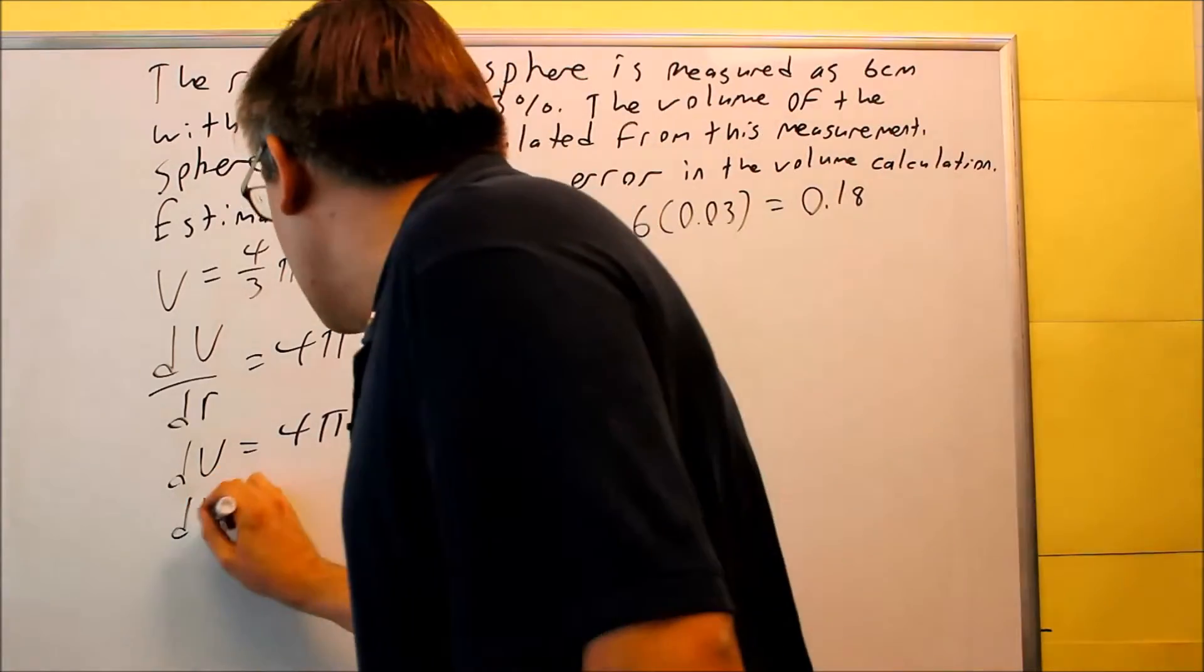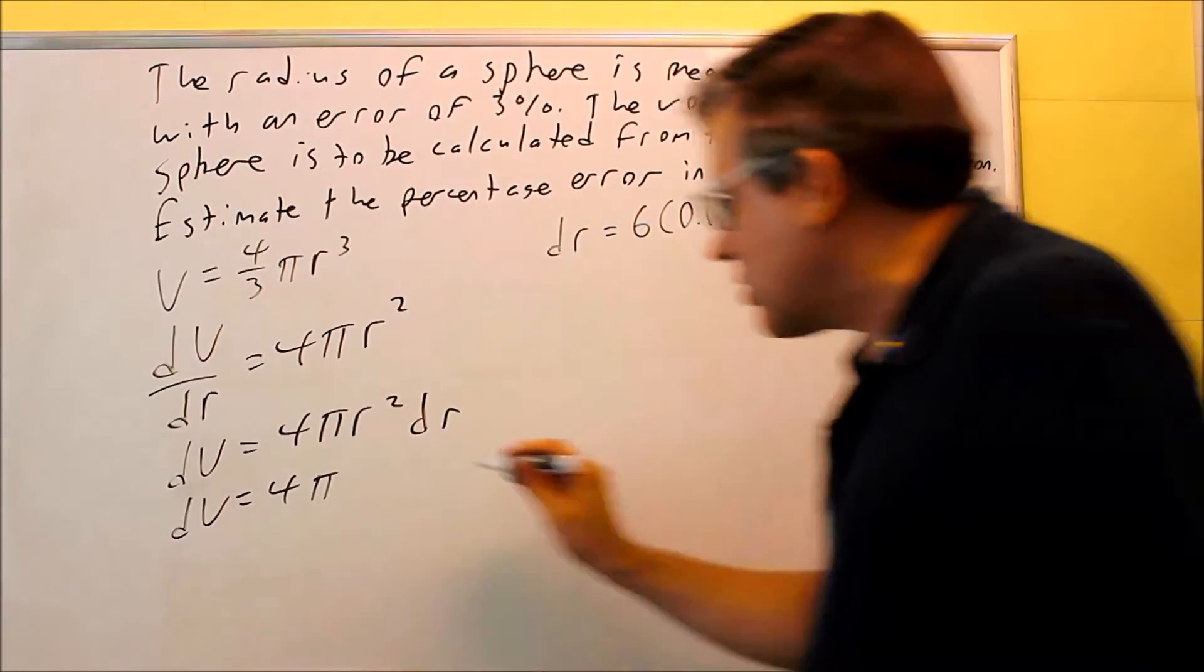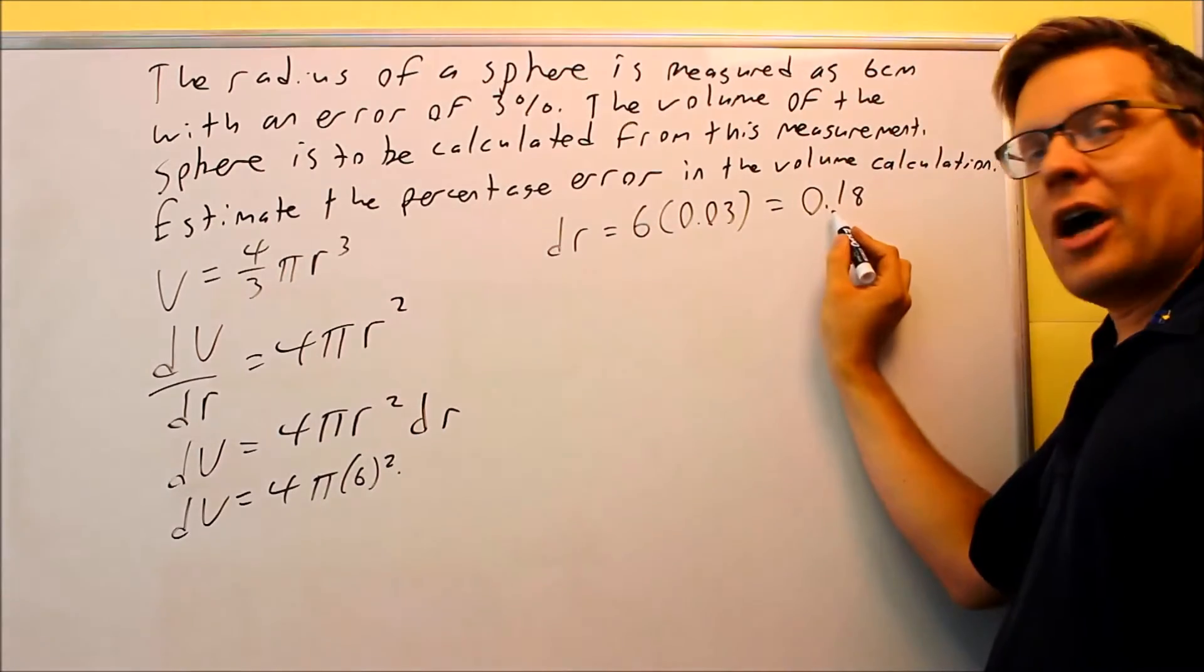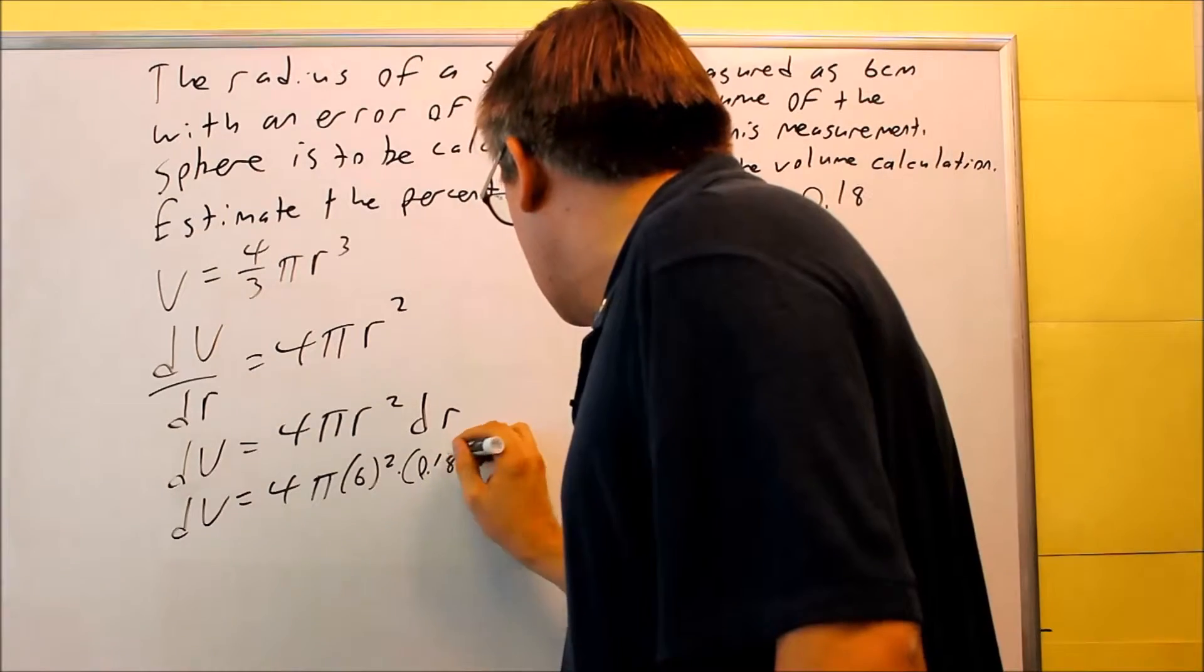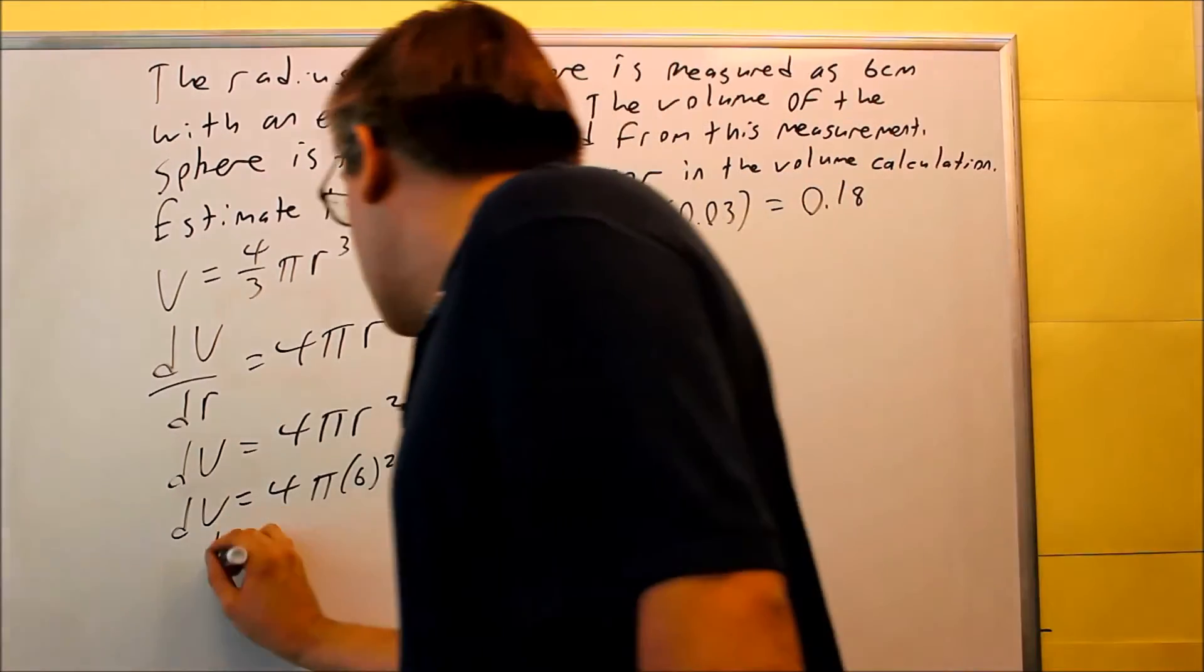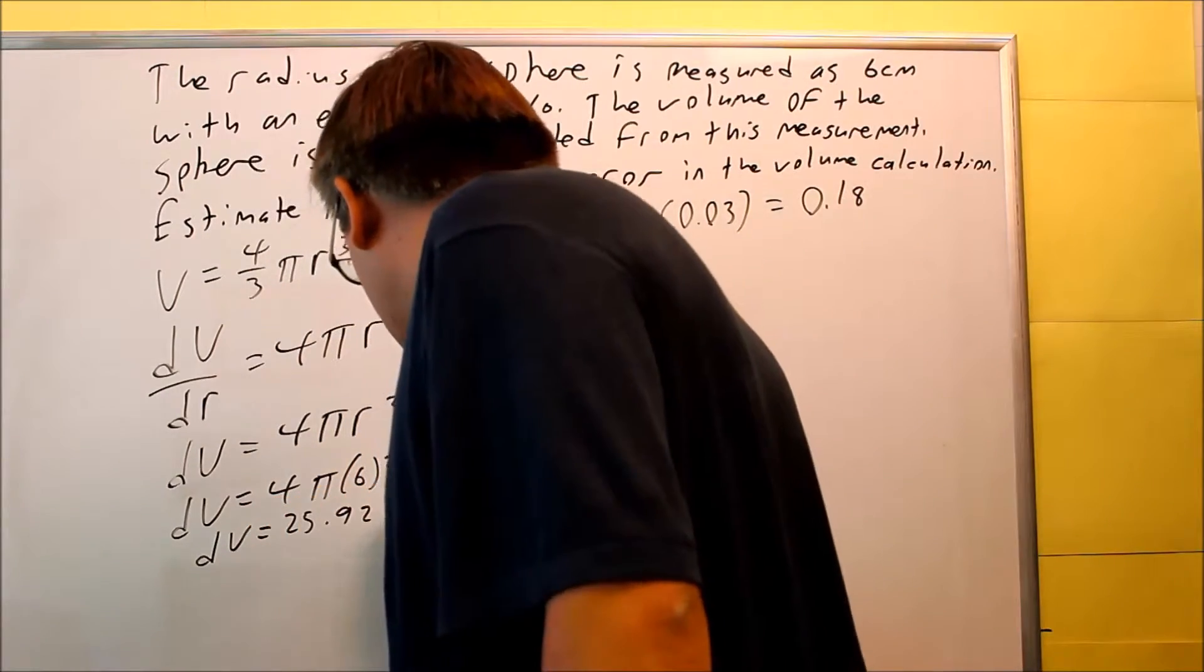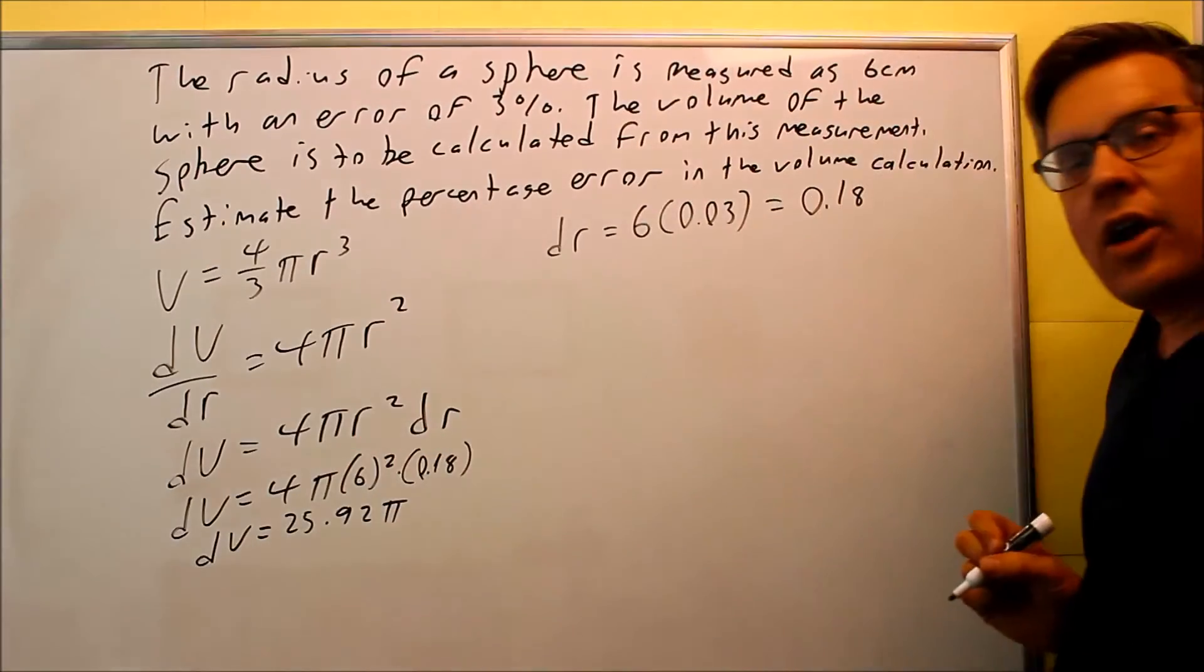I have dV equals 4π, now my normal radius is going to be 6, but then we're multiplying it by this error that we have in the radius, which is 0.18. We're going to put that into a calculator and we're going to get our dV. So dV is going to equal 25.92π. That's the error that we have there.